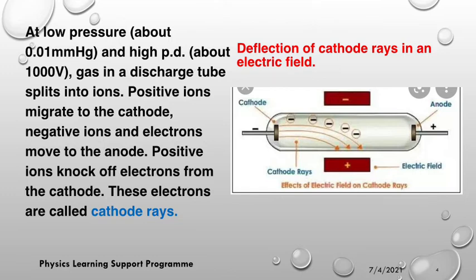That was what we called electrolytic dissociation for conduction through liquids. You can see that when the condition is right, gas can also split into ions. Positive ions, because they are positive, migrate to the negatively charged electrode, which is the cathode. Positive ions move to the cathode, while negative ions move to the anode. The positive ions that have moved to the cathode knock off electrons from the cathode — those electrons are what we call cathode rays.